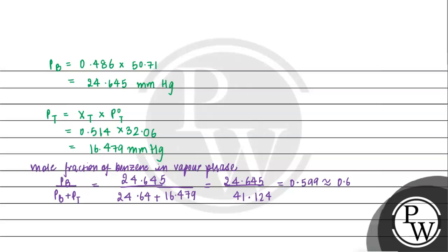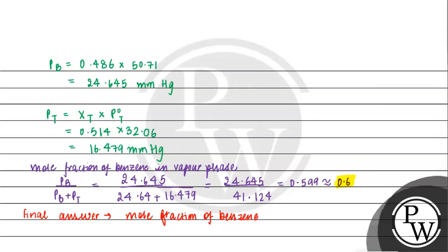Approximately 0.6. So our final answer will be: the mole fraction of benzene in vapor phase is 0.6. I hope you understood it well, thank you.